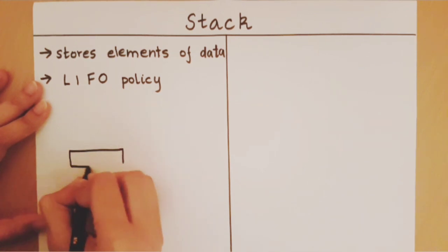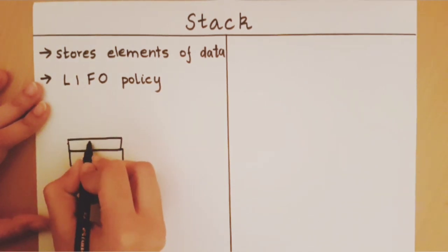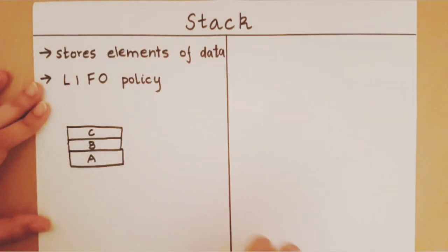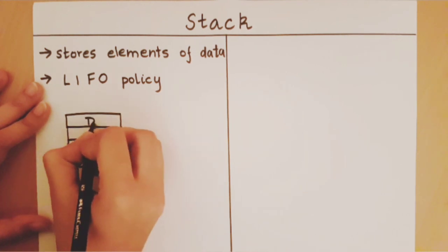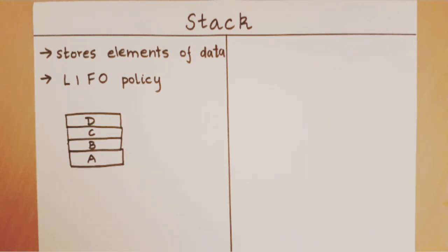Let us say a teacher is collecting notebooks. Person A submits his notebook first. After person A, person B submits his notebook. After person B, person C submits his notebook, and after person C, person D submits his notebook. When the teacher starts to correct the notebooks, the first notebook she will take out is notebook D. The last notebook to be submitted, which is notebook D, is the first notebook taken out — last in, first out.